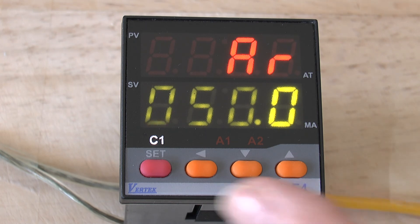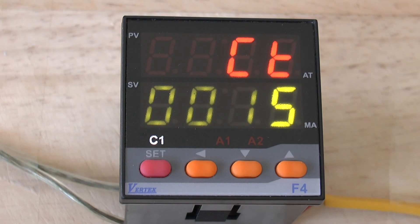The next parameter is the cycle time for your controller. You will find that the cycle time will be set to 15 seconds for a relay output controller and one second for a solid state relay output controller.